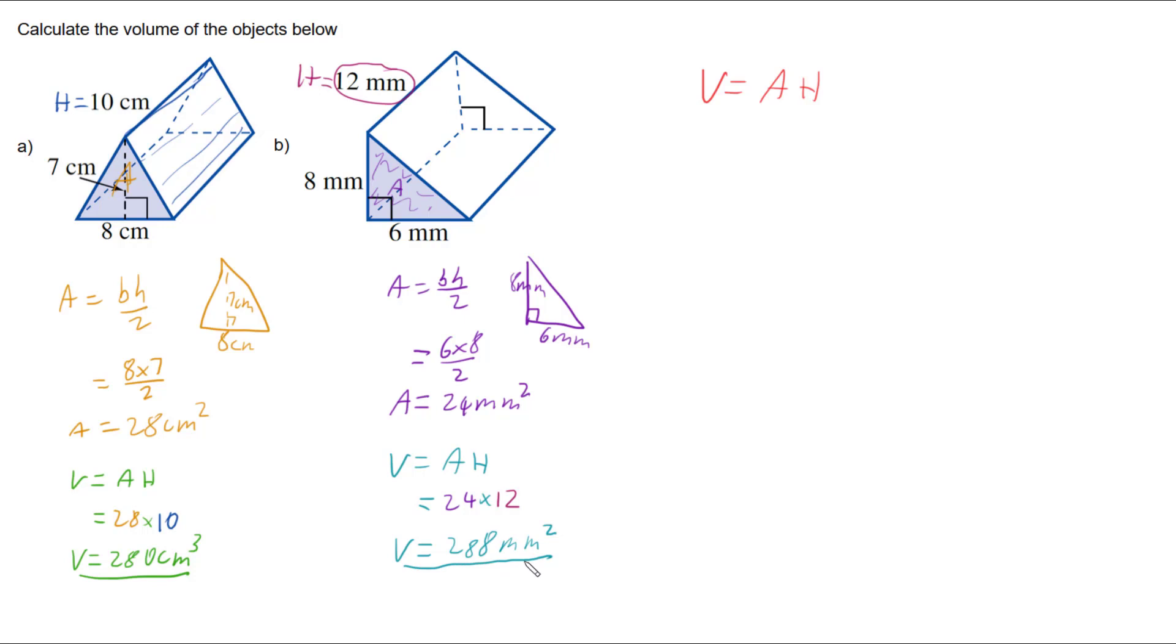And that's it. That's all we have to do. So the volume of any prism is area times height. We have triangles, so we work out the area of the triangle, multiply it by height, and we're done.